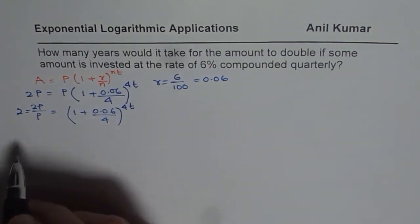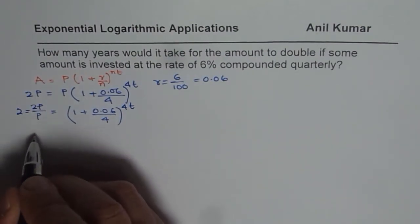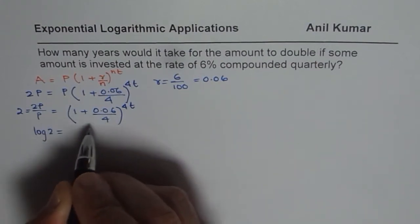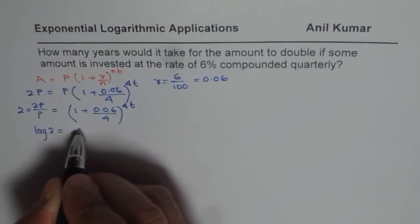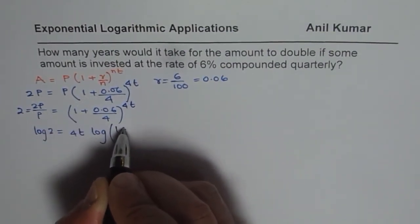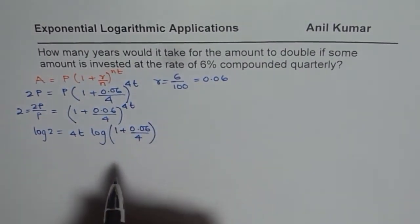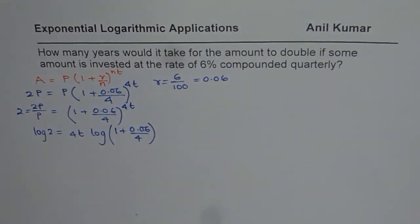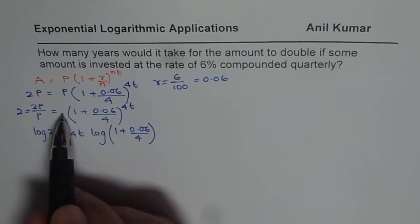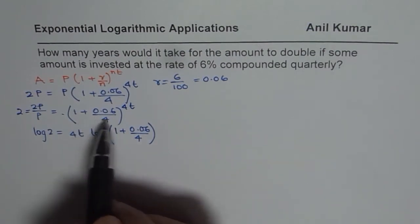So let us take log on both sides. While taking logs, we can take log to the base 10 — we will take log to the base 10. We get log of 2 equals log of the right-hand side. When you take log of that expression, you get 4 times T times log of 1 plus 0.06 over 4. You may like to review some logarithmic laws to understand this step.